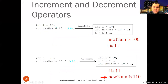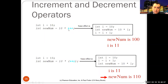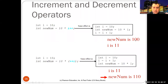We stopped last time at the difference between post-increment and pre-increment. The post-increment applies the operator after the variable — it increments i but the value of the expression is the old value of i. So new number becomes 10 multiplied by the old value of i, resulting in 100, while i becomes 11.